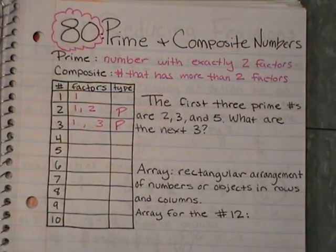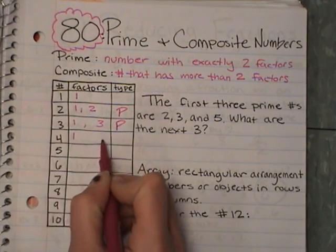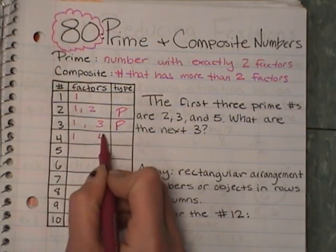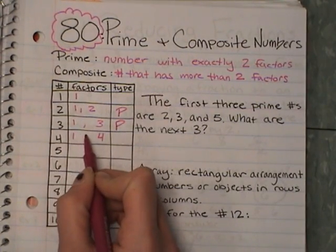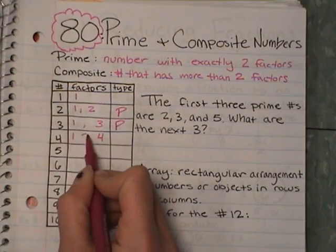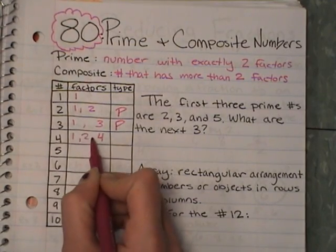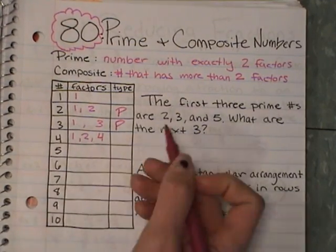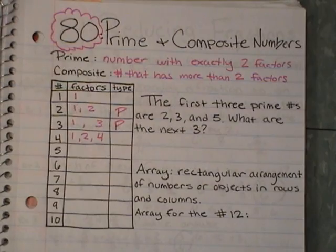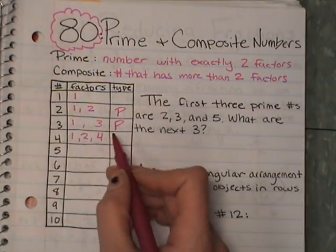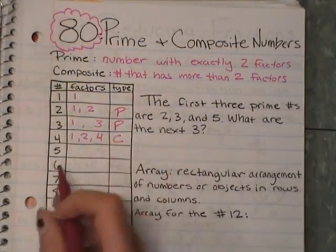Now I have 4. I do 1 — 1 times what is 4? My next number: 2. Can 2 fit in? Yes. 2 times what? 2. So my factors are 1, 2, and 4. Do I have exactly two factors? No. Do I have more than two factors? Yes. So that makes 4 composite.